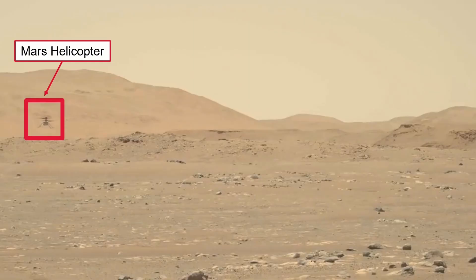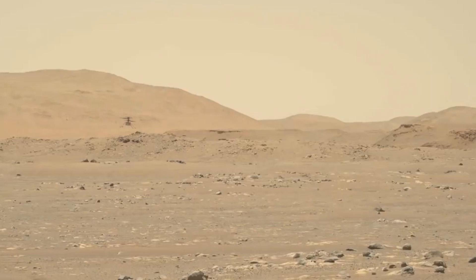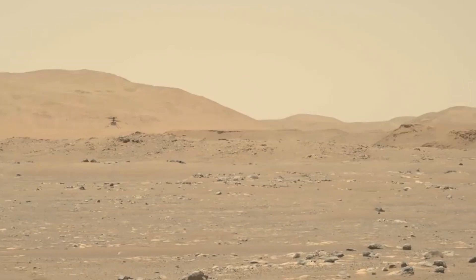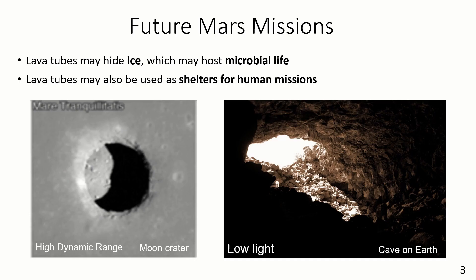Recently, NASA Mars Helicopter Ingenuity completed several successful flights on Mars, paving the way for future planetary exploration using unmanned aerial vehicles. To complete these missions, Visual Inertial Odometry, in short VIO, was a key algorithm since it provided crucial state estimation to the helicopter. Future missions now plan on exploring Martian lava tubes since they could host microbial life and are candidates for the first human base on Mars. However, the low-light conditions in these tubes pose significant challenges to existing VIO algorithms.